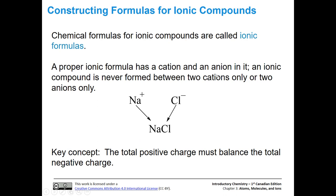Let's talk about putting together formulas for ionic compounds. When we write a chemical formula for an ionic compound, we call it an ionic formula. It always has a cation and an anion — it's never formed between two cations or two anions, because opposite charges attract. The charges must balance: for sodium chloride, sodium is plus one and chloride is negative one, so one plus negative one equals zero — the overall charge on the compound is zero. Those charges must balance to give a neutral, zero-charge compound.